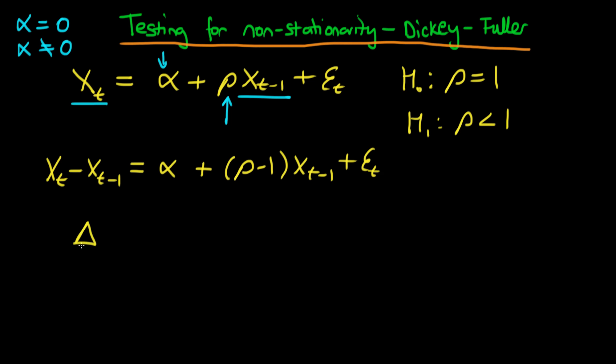If we write this more neatly, the left-hand side is just what we define as the change in xt, delta xt, and that equals alpha plus delta times xt minus 1 plus et.